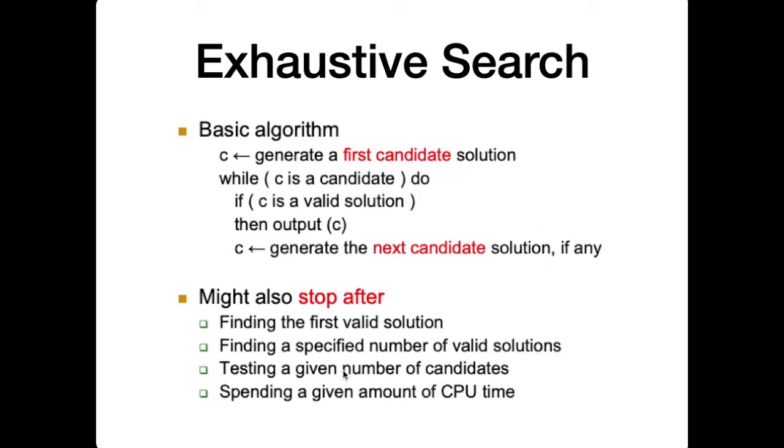Another possible stopping criteria is testing a given number of candidates. Usually this is the maximum number of candidates checked, because sometimes verifying a candidate solution takes significant time. The last possible stopping criteria is if the algorithm spends too much resources or a given amount of CPU time, then you can stop. If we use these two stopping criteria, it's not guaranteed we can find a valid solution.